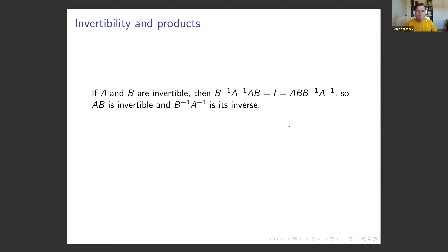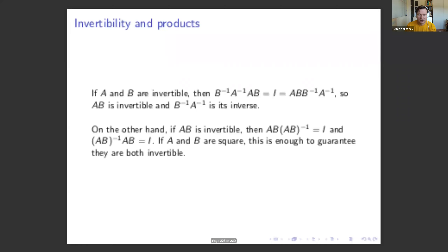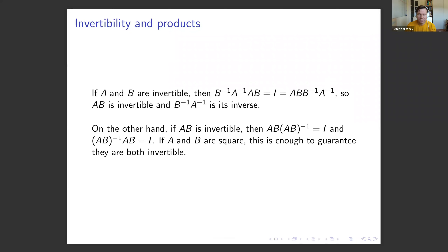If matrices A and B are invertible, several identities hold. The product AB is invertible and its inverse is B-inverse A-inverse, because B-inverse A-inverse times AB simplifies to identity: A-inverse A equals I, then B-inverse B equals I. In other words, when you invert a product of matrices, you swap the order: (AB)-inverse equals B-inverse A-inverse. For square matrices, it is enough to guarantee that both are invertible.